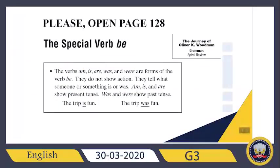Now let's check page 128 together. 'Be' is my special verb. Why? Because 'be' generally changes in accordance with tense. In this part we will see present tense and past tense. The verb forms are: am, is, are, was, were — all of them are forms of the verb 'be'. They do not show action.